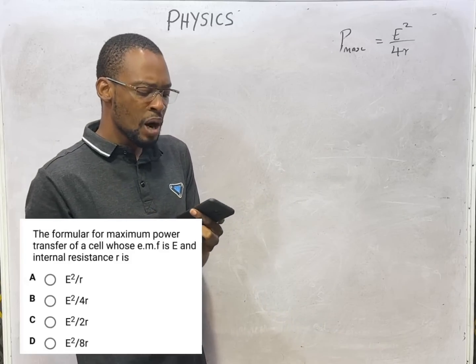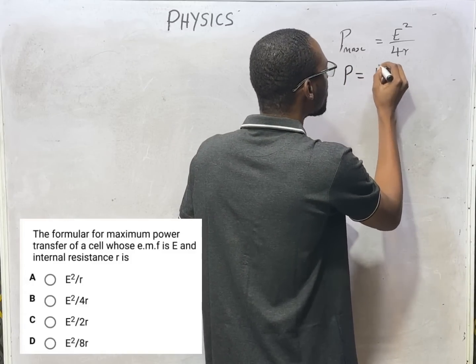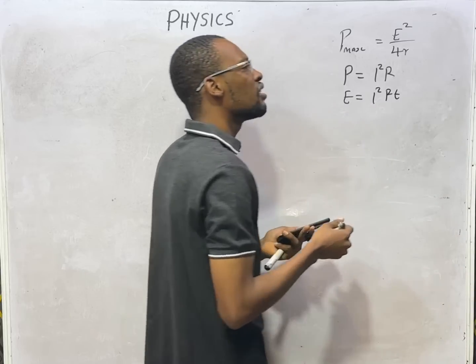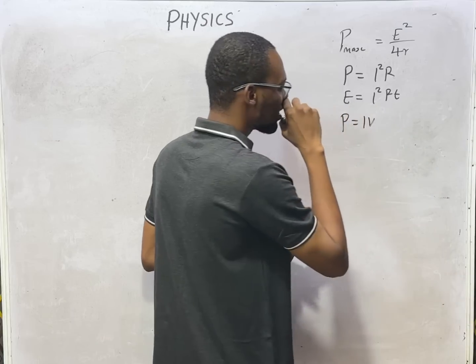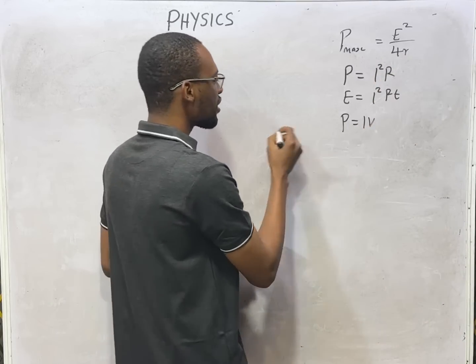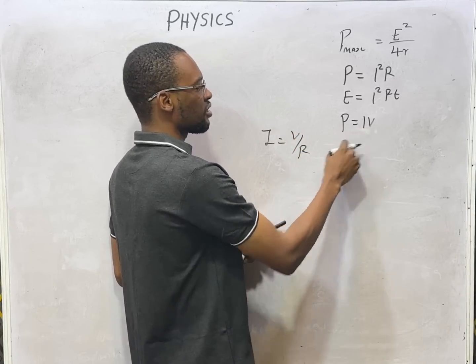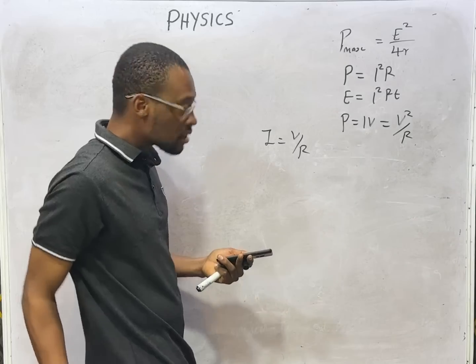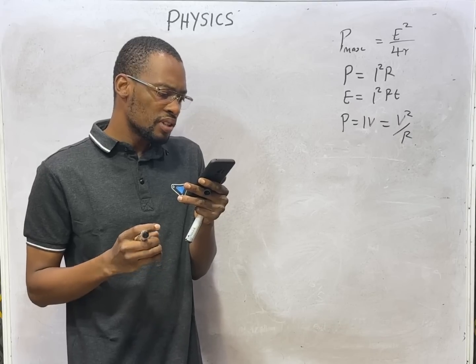Power dissipated in the circuit is I²R while energy is I²Rt. There are many formulas we can apply. For example, power is current times voltage, and voltage is IR, so that is how you get I²R. Current is voltage over resistance, so if you're changing current to voltage over resistance, power becomes V²/R.